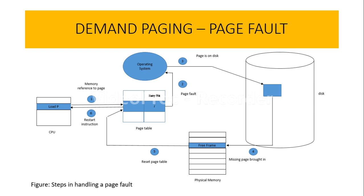Otherwise, if the reference is valid but the page is not swapped in, that means a page fault is occurring. Now it is the task of the operating system to check for the requested page on the disk. That's why the third step is 'page on the disk.'